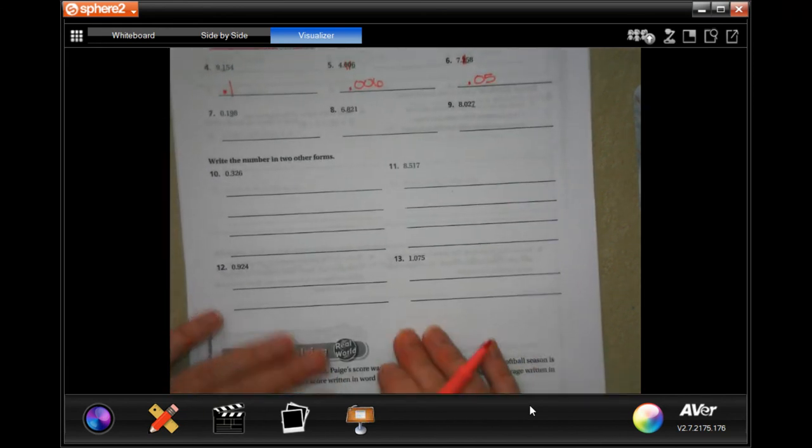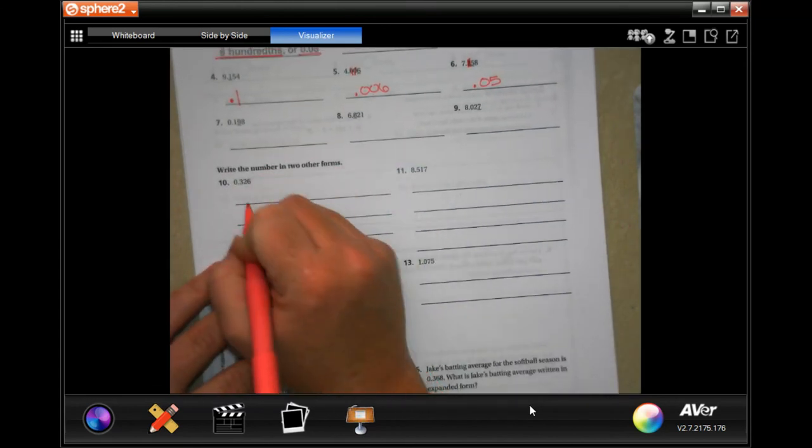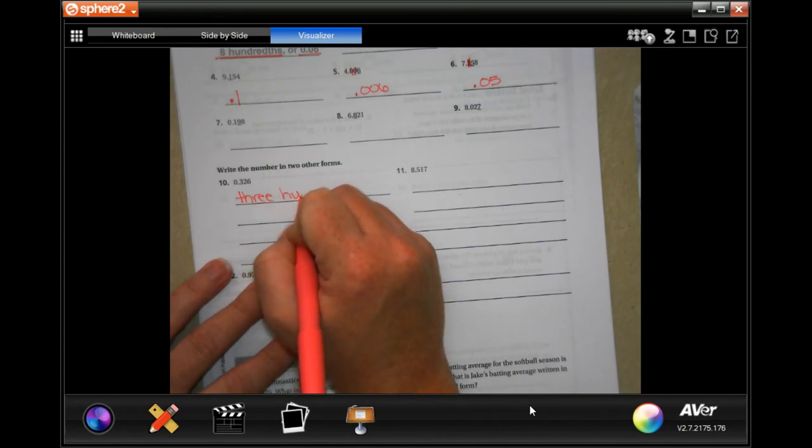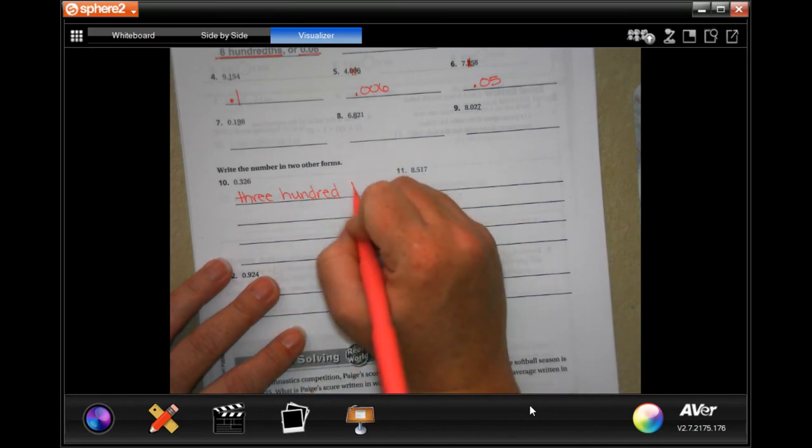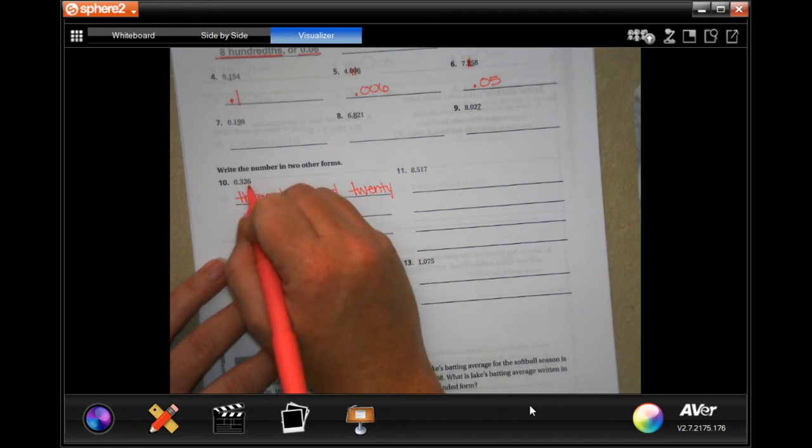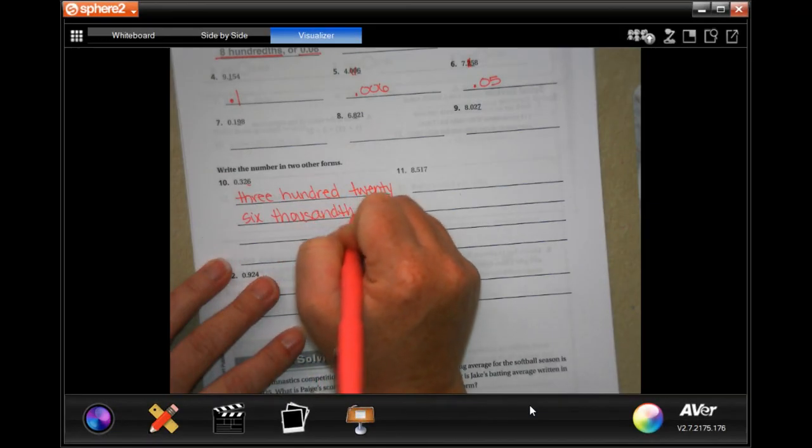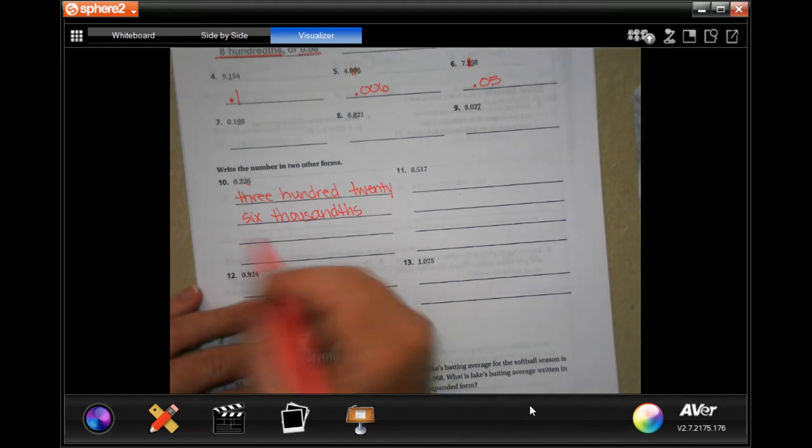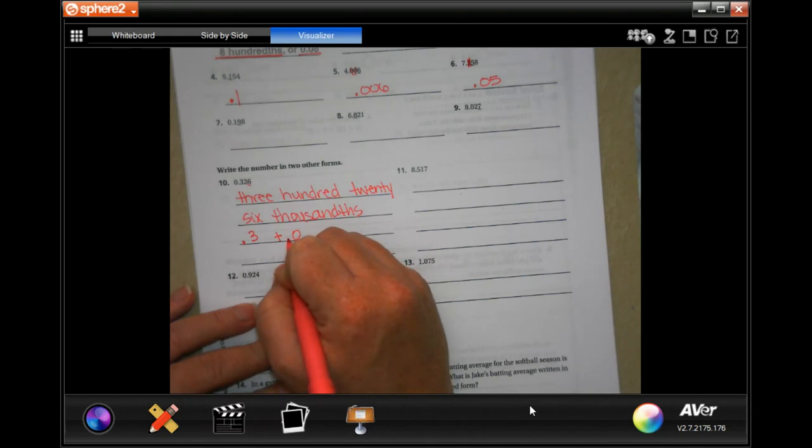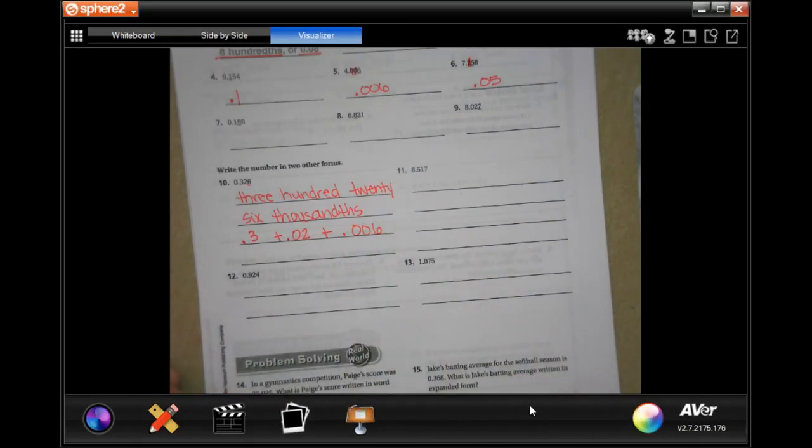We are going to come down and we're going to go ahead and write these numbers into other forms. So the first is in words: three hundred twenty six and that's in the thousandth place, thousandth. The other one is 0.3 plus 0.02 plus 0.006.